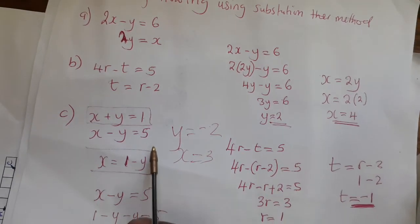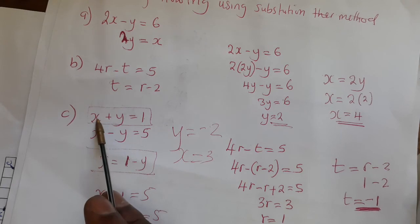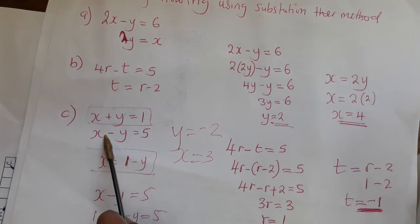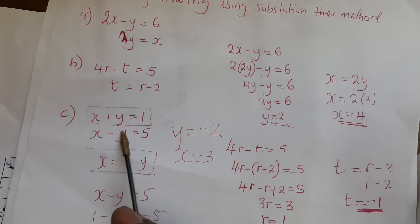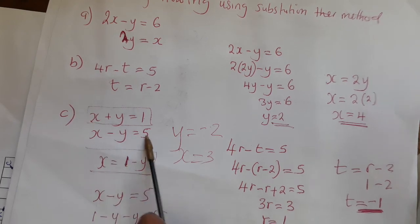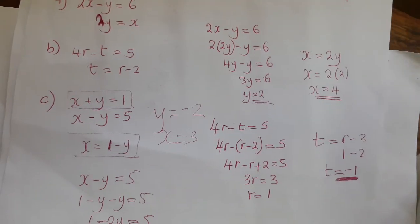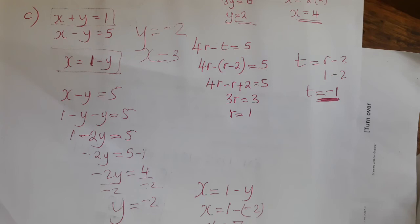You can verify: substituting into the first equation gives 3 minus 2 equals 1, and into the second gives 3 plus 2 equals 5. So these are the correct answers.